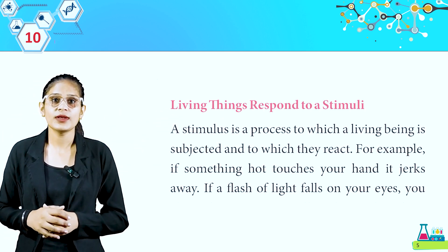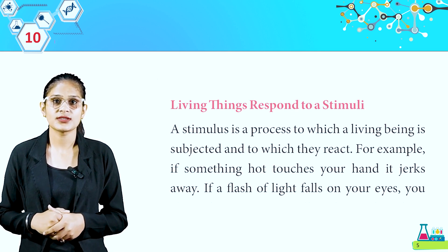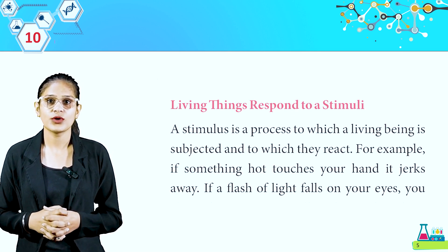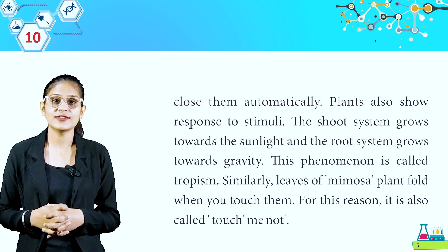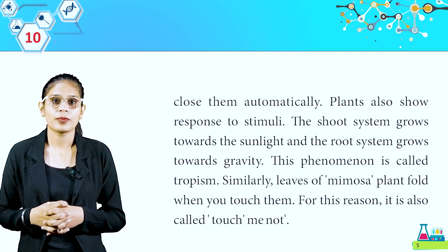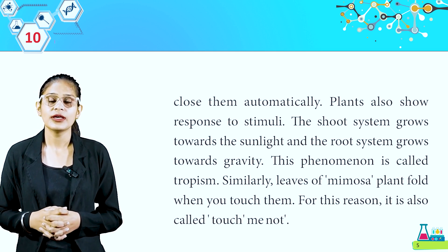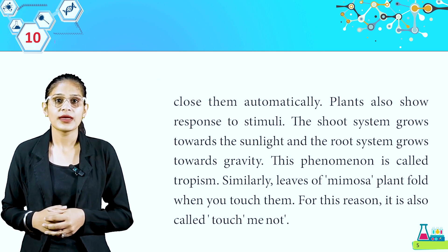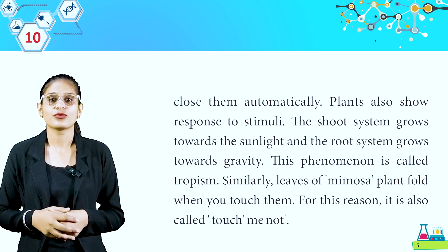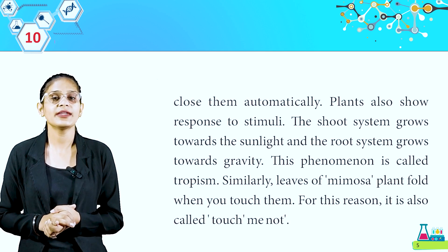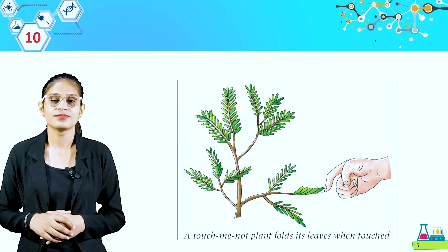Living things respond to stimuli. A stimulus is something to which a living being is subjected and to which they react. For example, if something hot touches your hand, it jerks away; if a flash of light falls on your eyes, you close them automatically. Plants also respond to stimuli — the shoot system grows towards sunlight and the root system grows towards gravity; this phenomenon is called tropism. Similarly, the leaves of the mimosa plant fold when you touch them — for this reason it is also called 'touch-me-not.' That means you give an instant reaction. Look at this picture: a touch-me-not plant folds its leaves when touched.